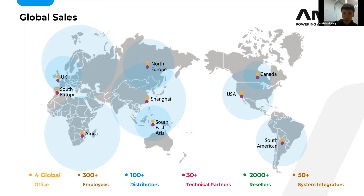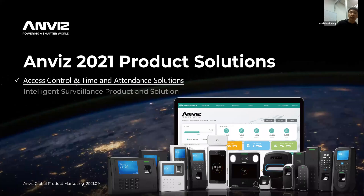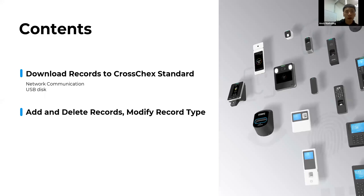Here are our MS 2021 product solutions, which include access control and time attendance solutions. Now let's get to the topic. The first item is downloading records to CrossCheck Extended, and the second is adding or modifying record types.